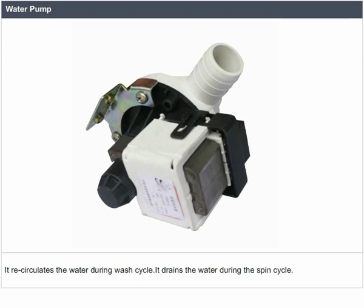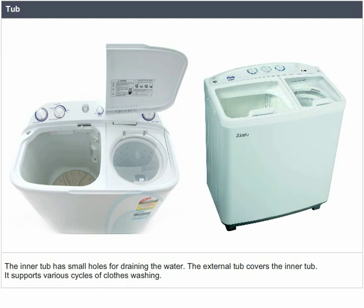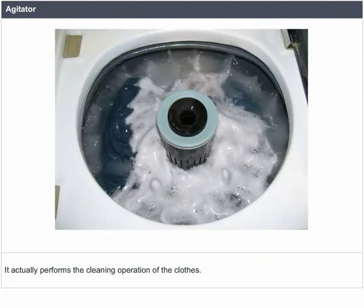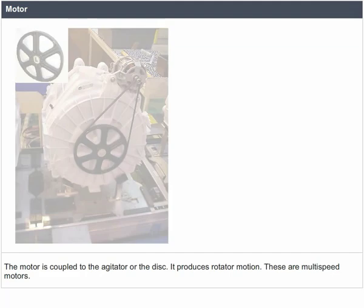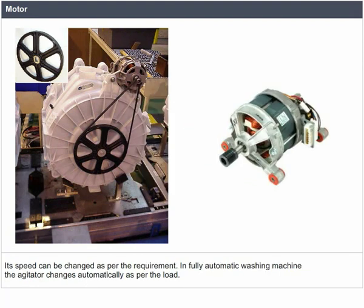The water pump circulates water through the washing machine. It works in two directions: it recirculates the water during the wash cycle and drains the water during the spin cycle. Two types of tubs are in the washing machine — inner and outer. The clothes are loaded in the inner tub where they are washed, rinsed, and dried; the inner tub has small holes for draining the water, and the external tub covers and supports the inner tub. The agitator is located inside the tub and performs the cleaning operation of the clothes. The motor is coupled to the agitator or disc and produces rotary motion; these are multi-speed motors whose speed can be changed as required.